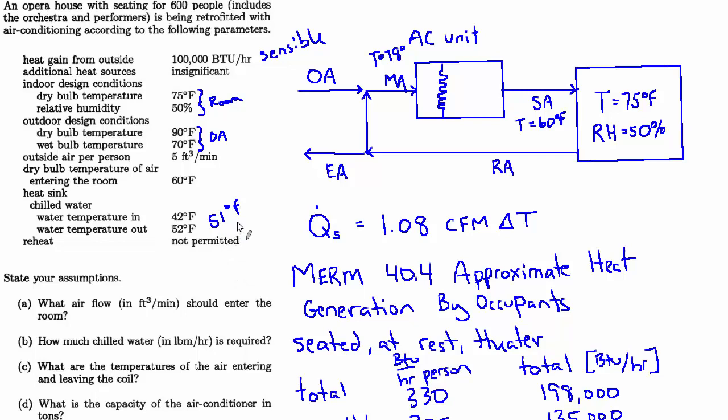So I think 51 is pessimistic. That's assuming that the coil is going to be almost as warm as the chill water supply temperature. It's definitely a conservative approach. You could say it's 51. But I would argue that it's probably much closer to the chill water supply temperature, 42.